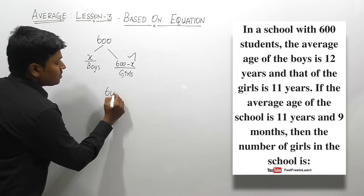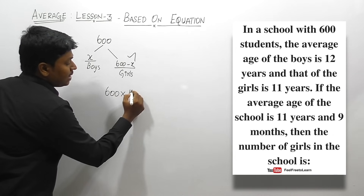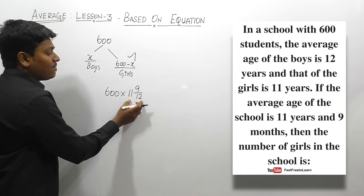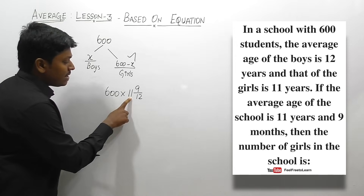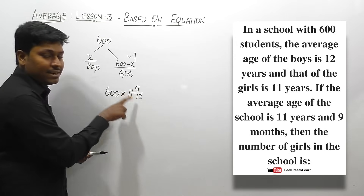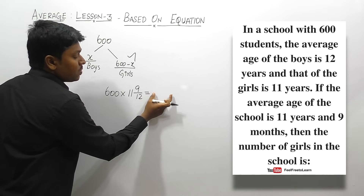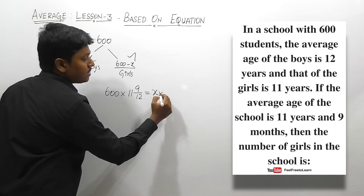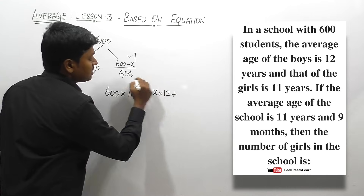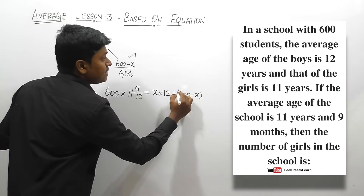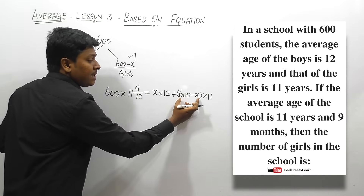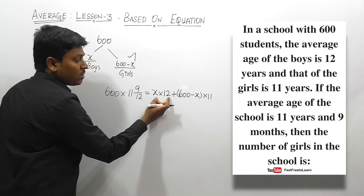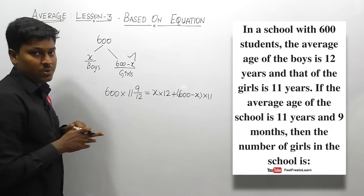The total number of students is 600. Let x be the number of boys, so 600 minus x will be the number of girls. We frame the equation: 600 into (11 years and 9 months) equals total age of boys plus total age of girls. Converting 9 months to years gives 9 divided by 12, which simplifies to 3 divided by 4. So 11 years and 9 months equals 47 divided by 4. Boys are x with average 12, girls are 600 minus x with average 11.